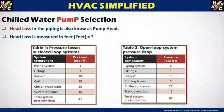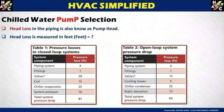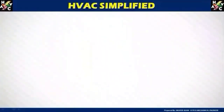The parameters to be considered for pressure loss in a closed loop system are: piping system, fittings, valves, coils, and chiller evaporator. In an open loop system, you consider: piping system, fittings, valves, cooling tower, chiller condenser — and static elevation is an added parameter which must be considered in an open loop system.